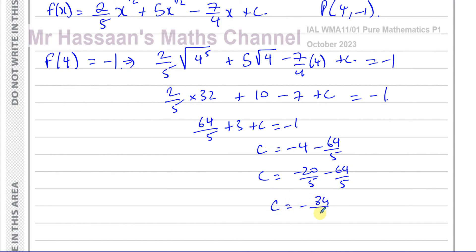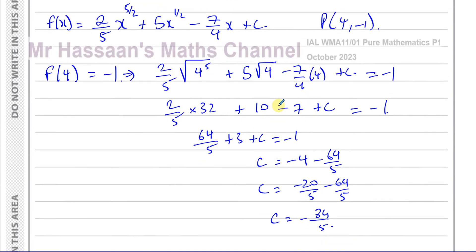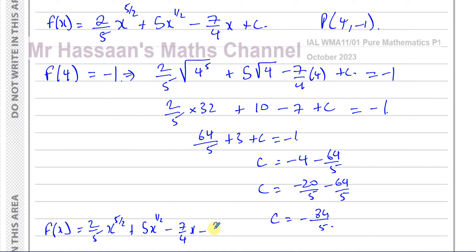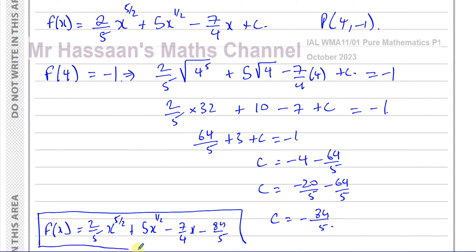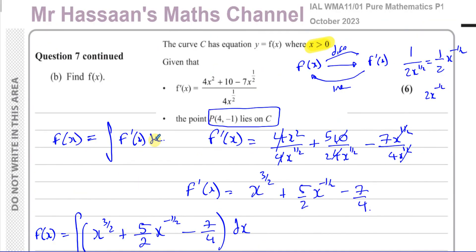So C is −84/5. Therefore f(x) = (2/5)x^(5/2) + 5x^(1/2) − (7/4)x − 84/5. That is our equation and the completion of question number 7 from the October 2023 P1 paper.